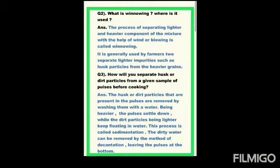Winnowing is used when a mixture has one lighter component (less weight) and one heavier component, and we separate them using wind or blowing. It is generally used by farmers to separate lighter impurities such as husk particles from the heavier grains.